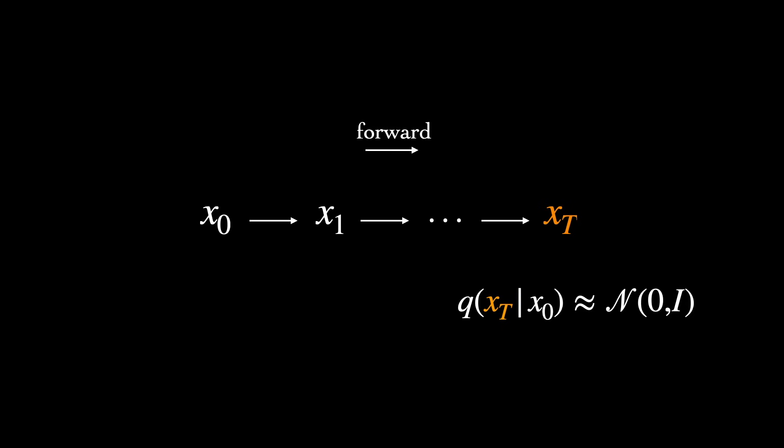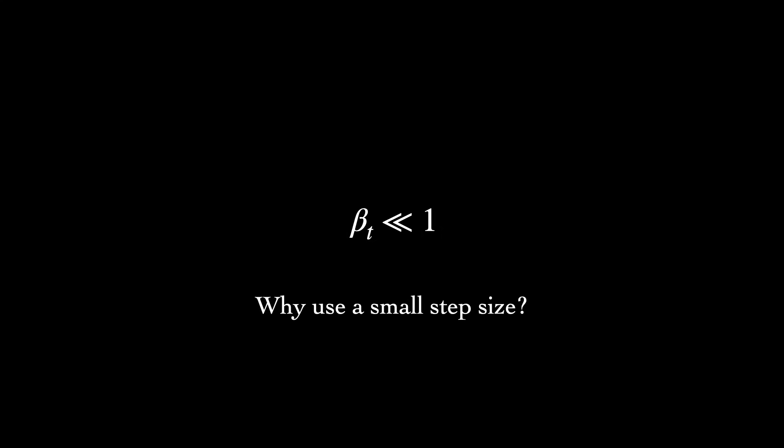Using a large, albeit finite, number of steps allows us to set the individual variances, beta T, to be very small, while still approximately maintaining the same limiting distribution. But why do we want to use a small step size? What's the benefit? Well, it means that learning to undo the steps of the forward process won't be too difficult.